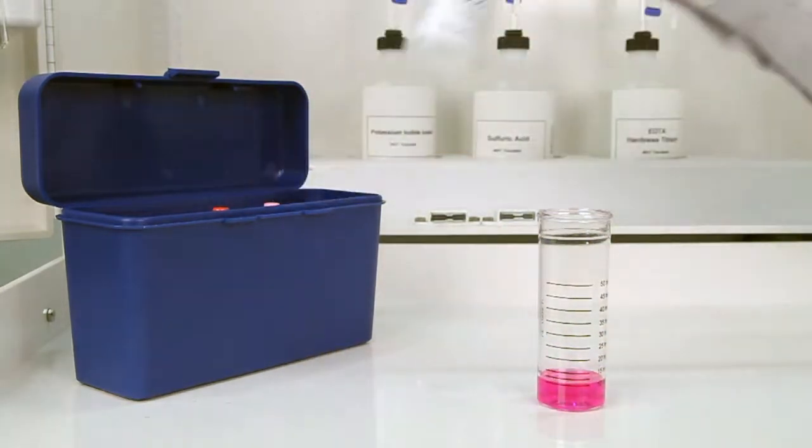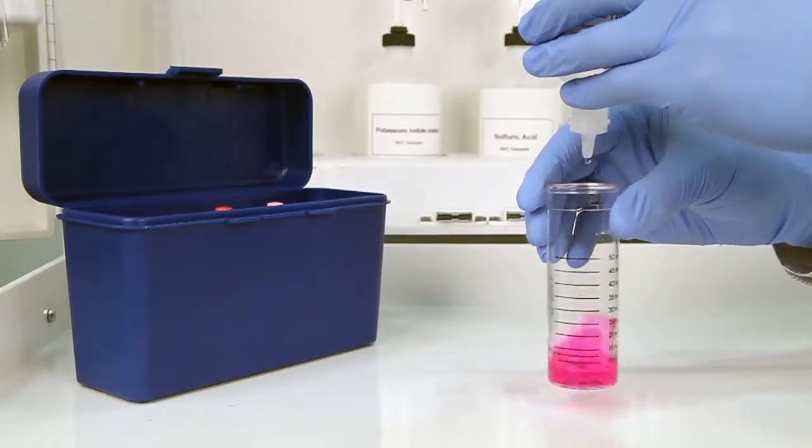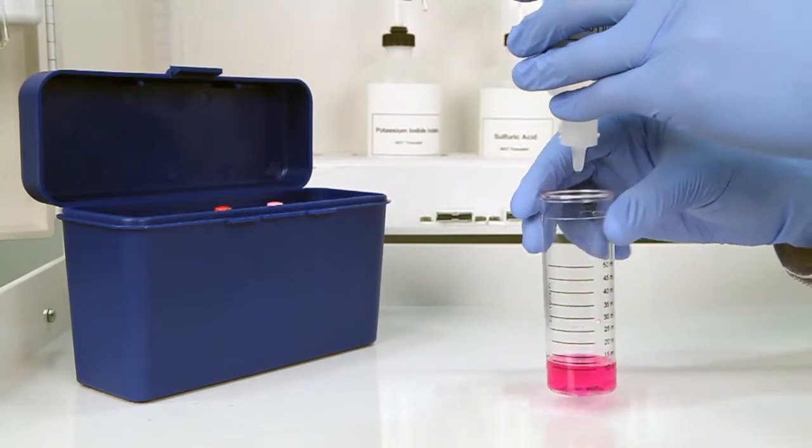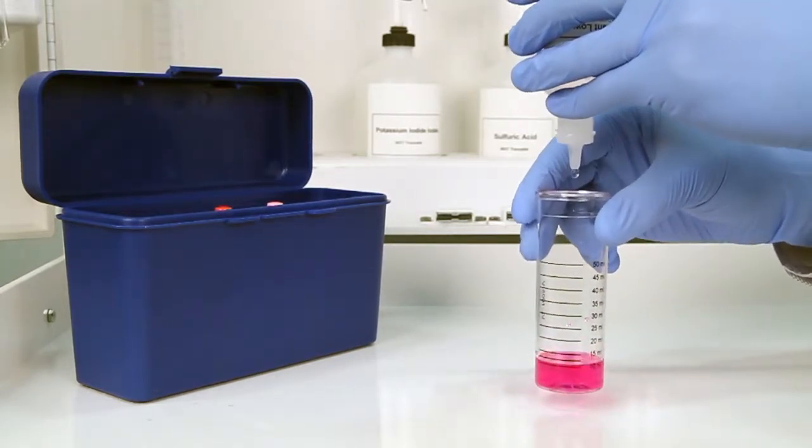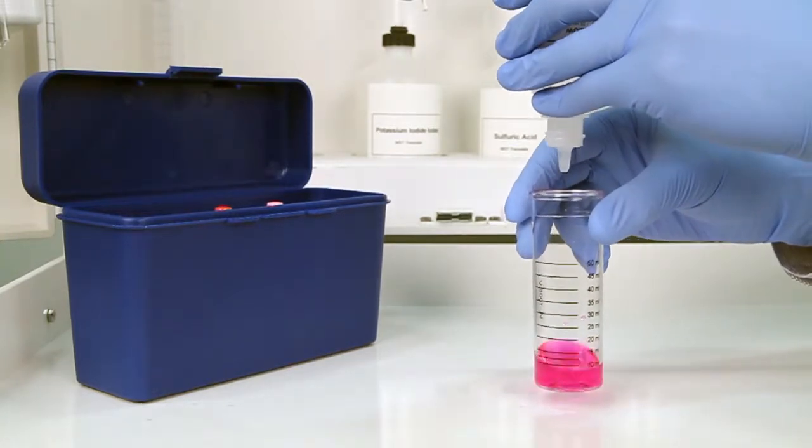The next step is to perform the titration using sulfuric acid 0.5 normal. Each bottle of titrant is labeled with the equivalency and sample size it was manufactured for. It's important to make sure you have the proper titrant and the proper sample size for this titration.